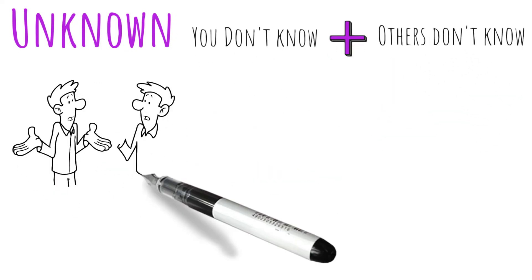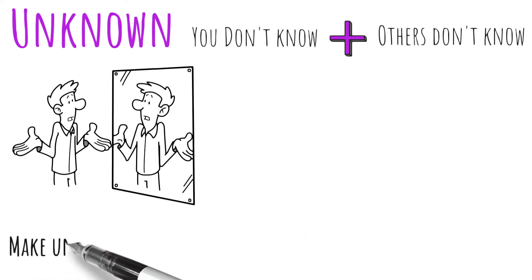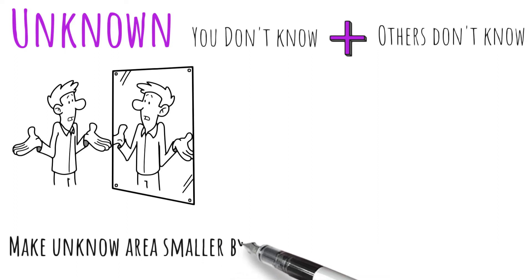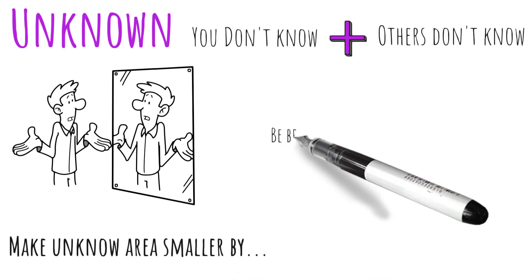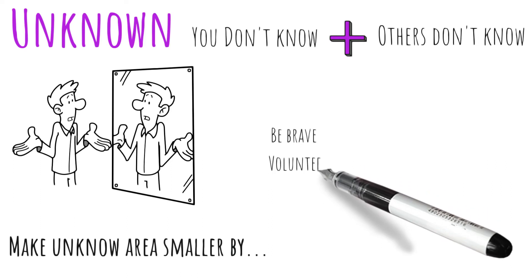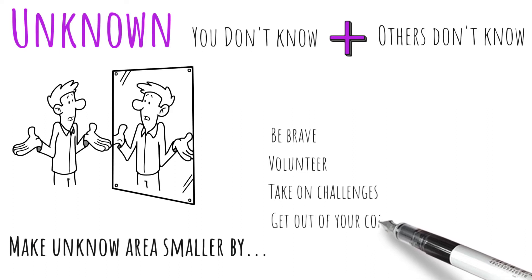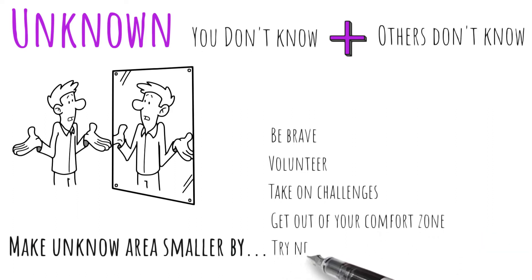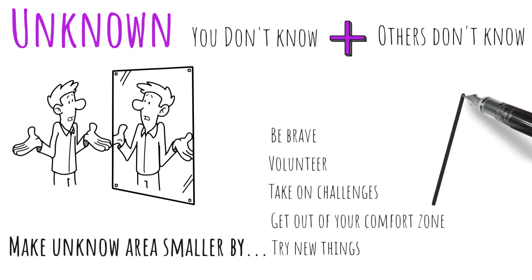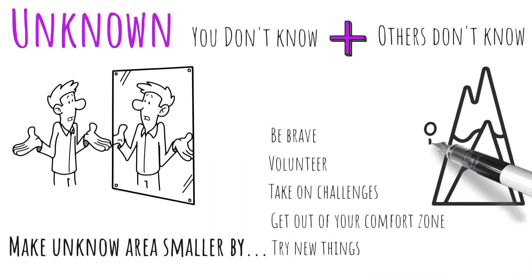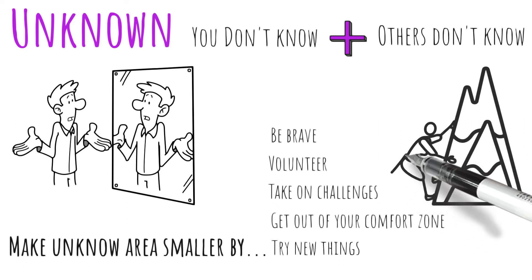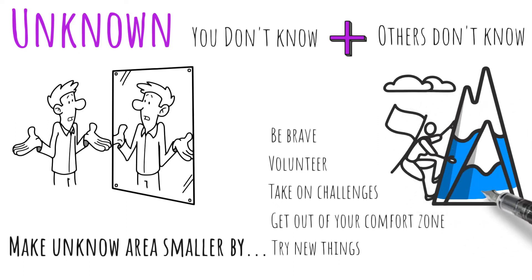Unknown — also known as the unconscious area, where things are unknown to you and unknown to others. Information in this quadrant is revealed by taking on new experiences. For example, you and your colleagues may not know that you have excellent people management skills until you are put in charge of a team. Working on a project may uncover excellent negotiation or stakeholder management skills. A large unknown area may indicate that you still have a lot to learn about yourself, or that you are still young or inexperienced. Reveal more of this area by getting out of your comfort zone and trying something new.